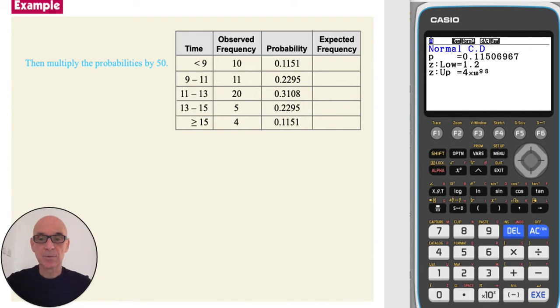As the sample size was 50 children, we need to multiply these probabilities by 50 to get the expected frequencies.